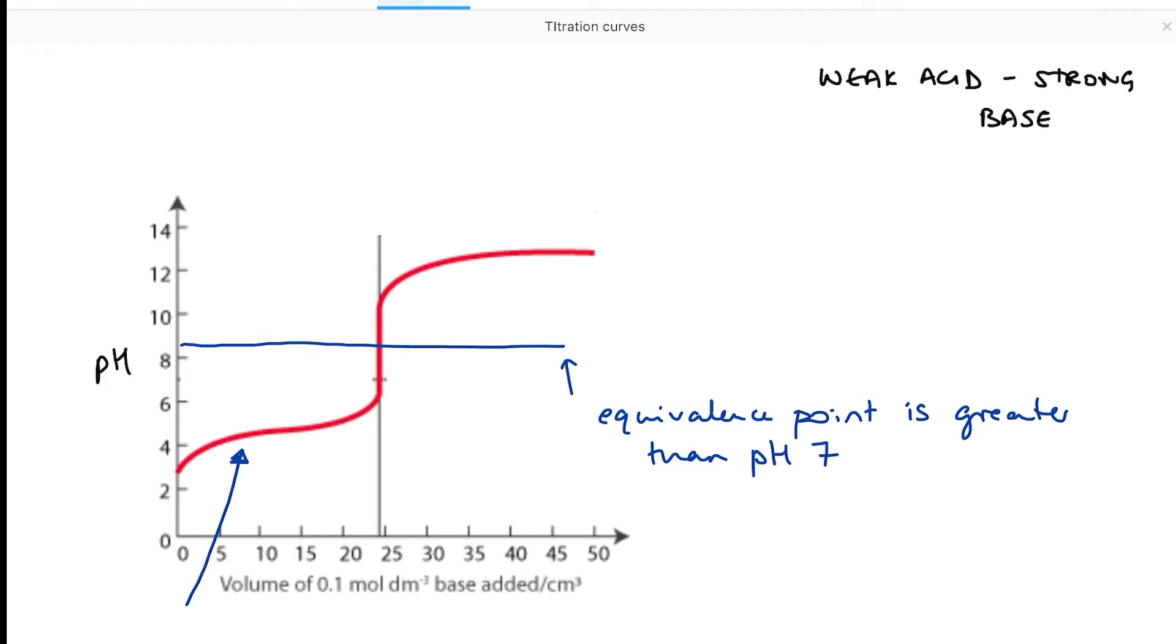The shape of this curve has changed. The pH changes far more slowly to begin with than it would do for a strong acid-strong base titration. The second part of the curve remains exactly the same. So let's pull this apart and do some explaining.